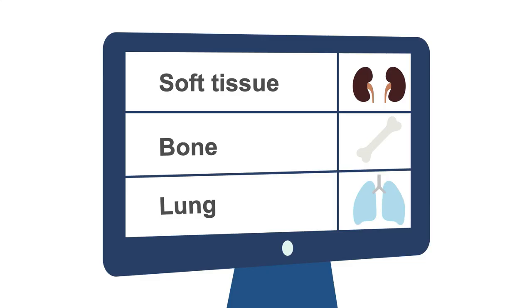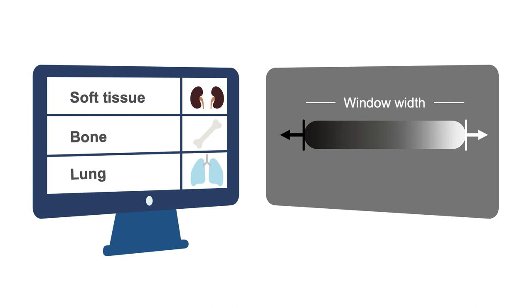In summary, the three most common and useful window settings for your image review are soft tissue, bone, and lung. Each setting has a range of grayscale values it displays called the window width, and a center point called the window level.